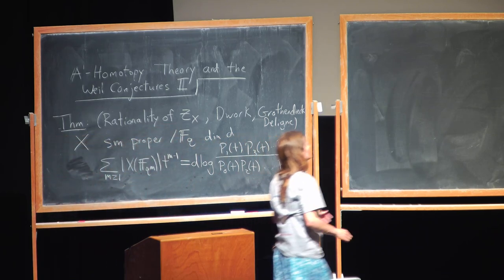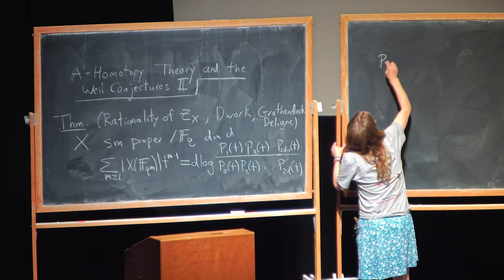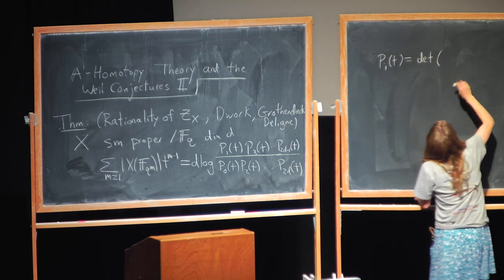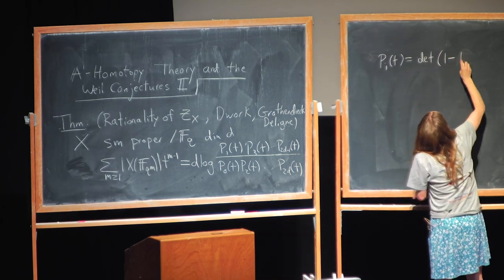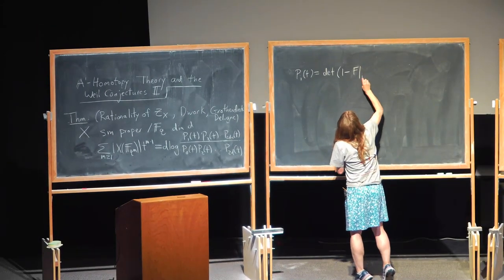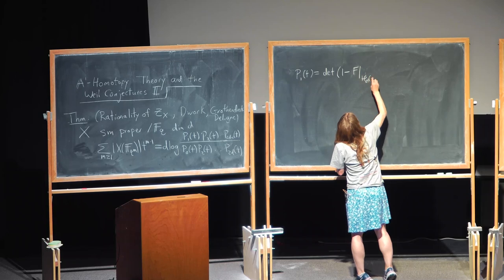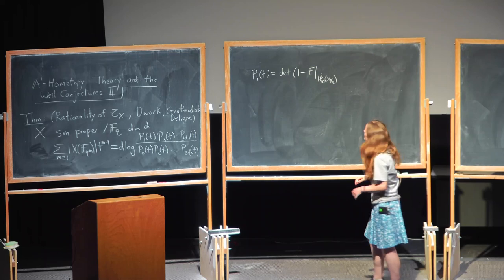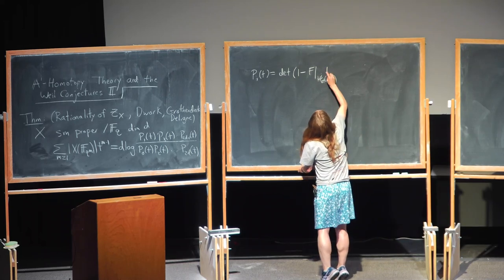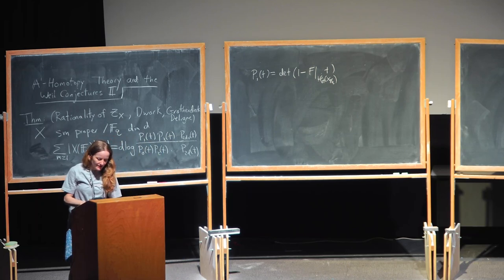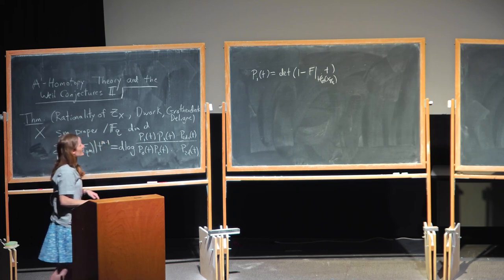Where p_i of t was the characteristic polynomial of the action of relative Frobenius on a cohomology theory that we haven't defined — say, with Q_ℓ coefficients — times t. And this is a consequence of the Lefschetz fixed-point theorem.